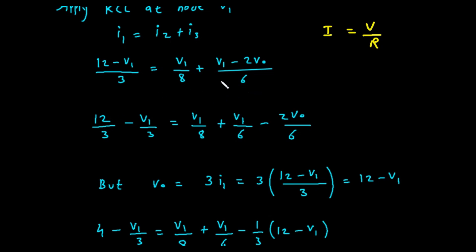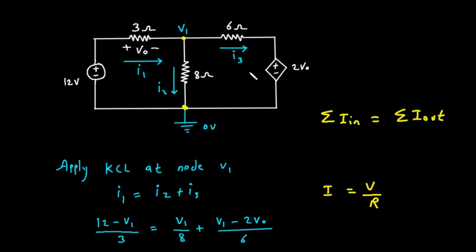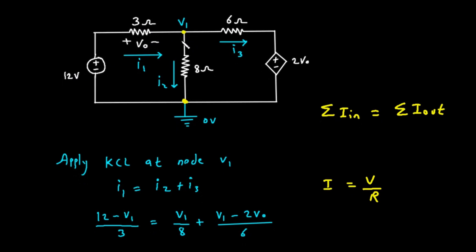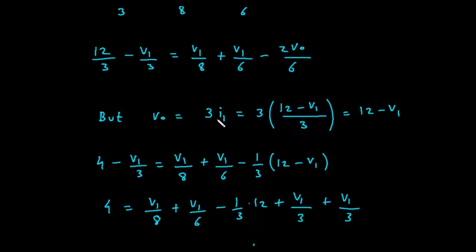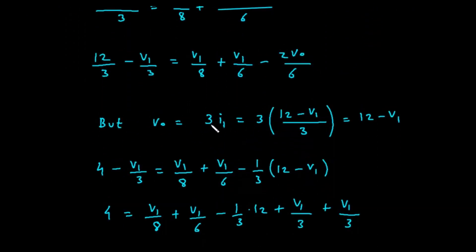So I sub 3 is equal to V sub 1 minus 2 times V0 divided by 6. Now we substitute these expressions back into our KCL equation. This gives us 12 minus V sub 1 divided by 3 equals V sub 1 divided by 8 plus V sub 1 minus 2 times V0 divided by 6. This equation has two unknown variables, V sub 1 and V0. We need a second equation to relate them.